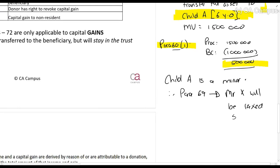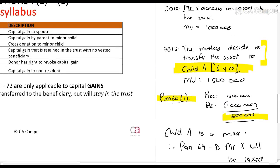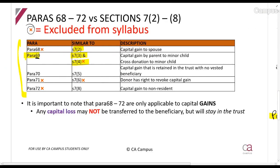It's exactly the same concept as when we looked at income. If this asset produced income of R100,000 and they give it to the child, who will be taxed? The father, or parent — Mr. X — because it's a minor child. The same section applies there.